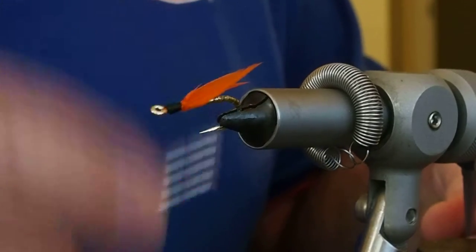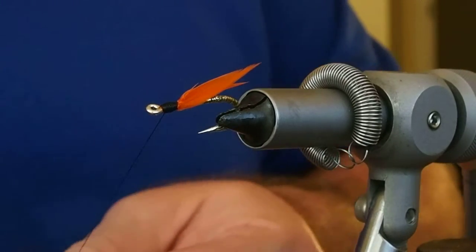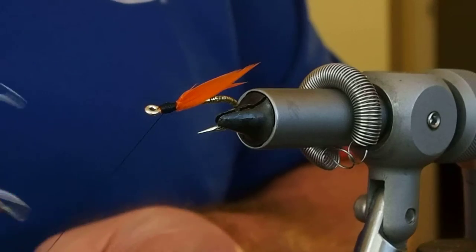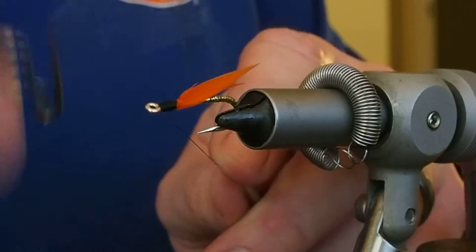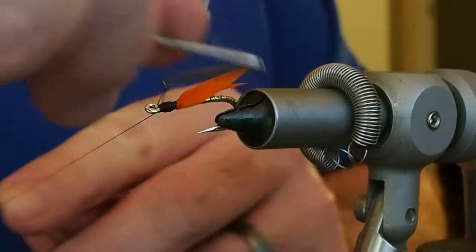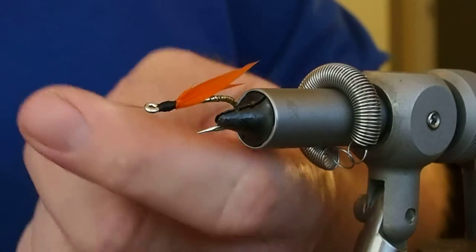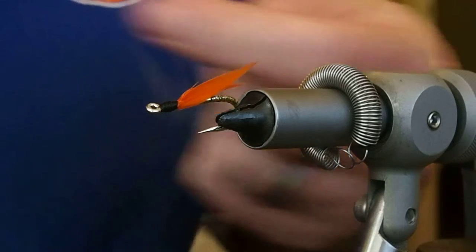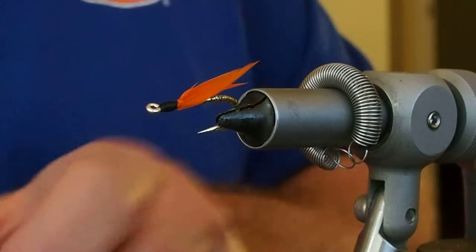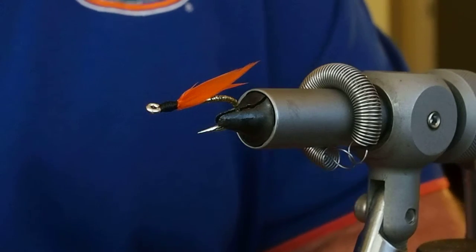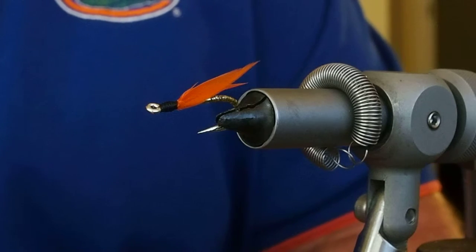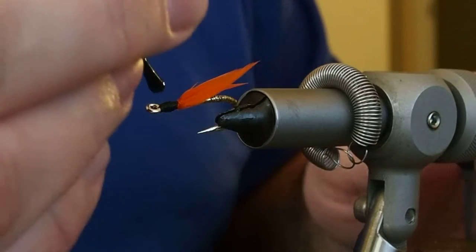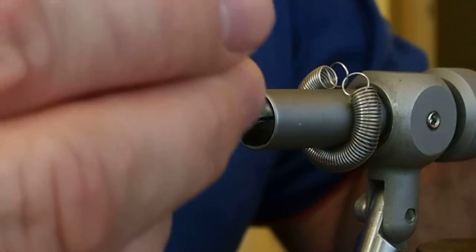It's about right there. Go ahead and whip finish. And then just touch your thread wraps with a little Sally Hansen's to protect those and give kind of a glossy head. Try not to touch the feather.